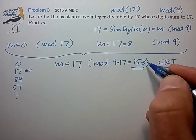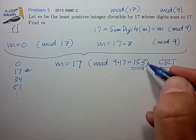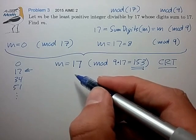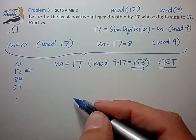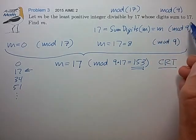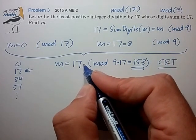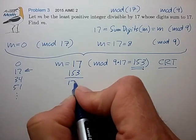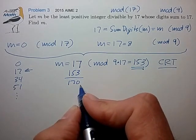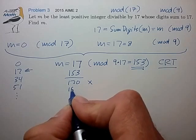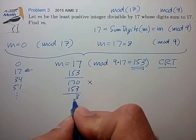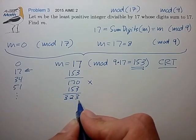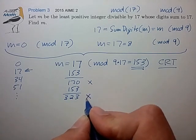With this high mod number, what this means is we can just add multiples of 153 to look for possible candidates that could solve the original problem. 17 doesn't solve the original problem. Let's add 153—that doesn't add to 17, so that's not correct. Let's add 153 again: 323. Those digits don't add to 17, that's not correct.